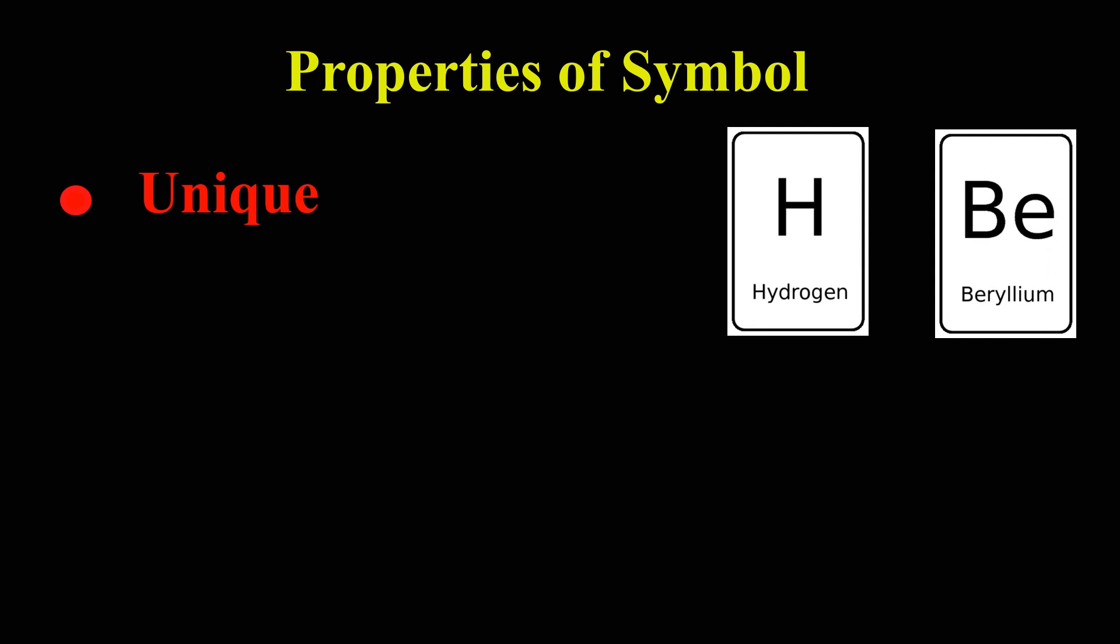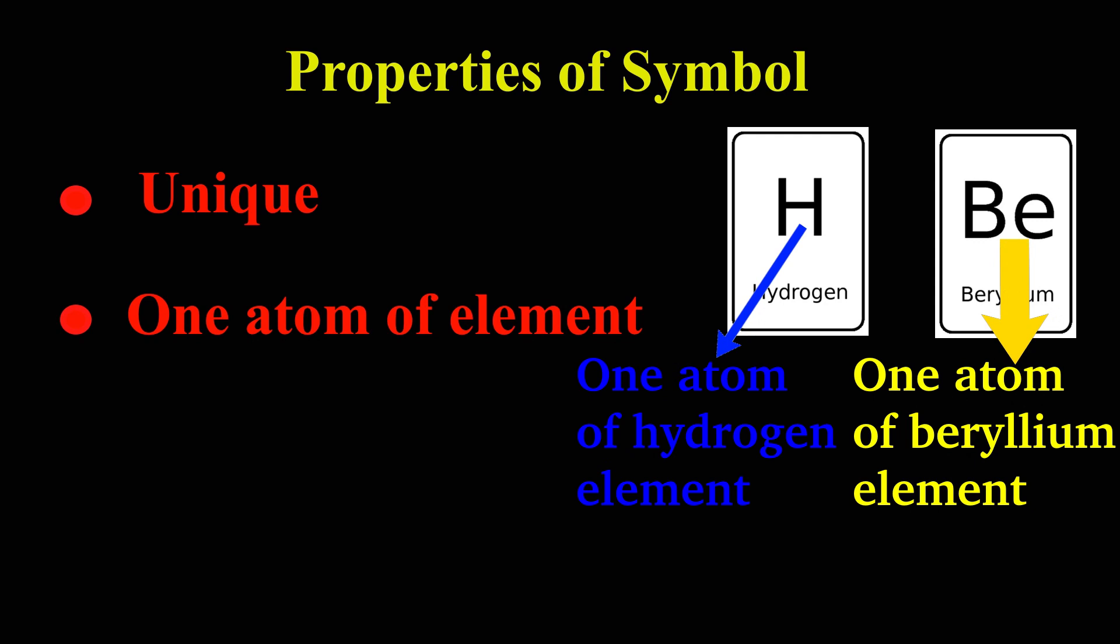Let's see few properties of a symbol. 1. A symbol is always unique for an element. This means that no two elements can have same symbol. 2. A symbol represents one atom of the element.